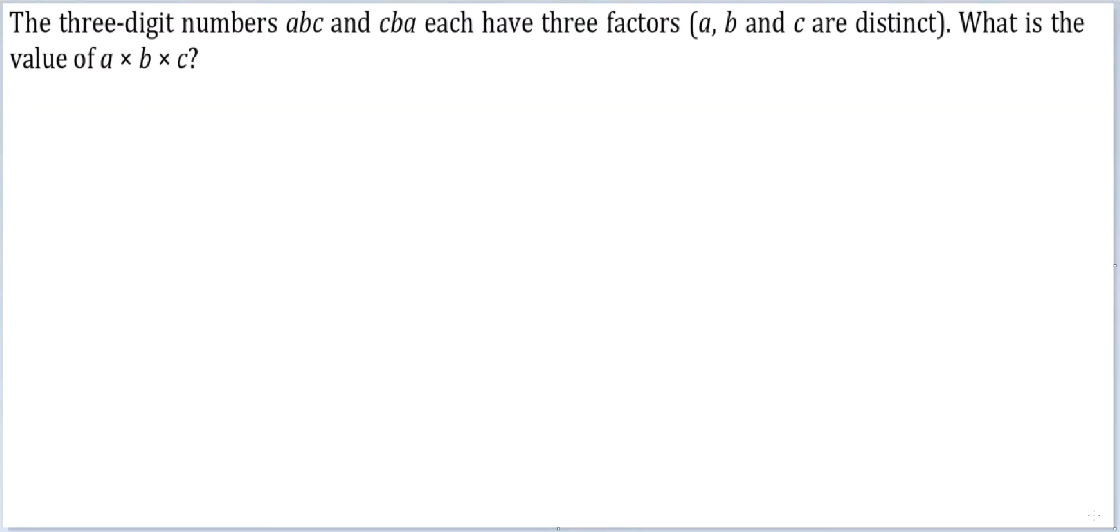Let's look at this question. The three-digit numbers ABC and CBA each have three factors. A, B, and C are distinct. What is the value of A times B times C?